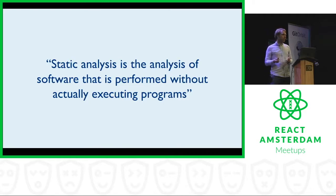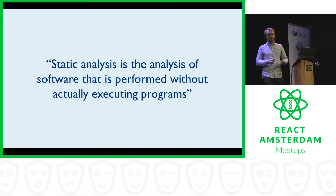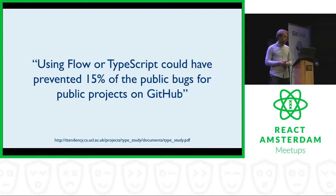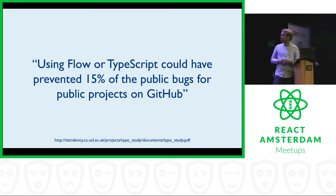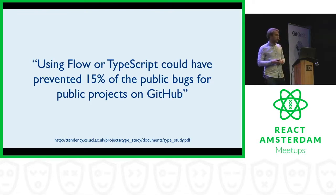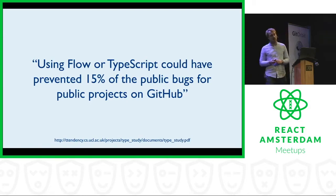Those are two kinds of ways to improve the quality of your code and to make sure that what you deliver is actually what you want it to be. There is some research done by the University of London together with Microsoft which concluded that using Flow or TypeScript could have prevented 15% of the public bugs for public projects on GitHub — which is pretty massive, since it's not really that big of a step to introduce it in your workflow.